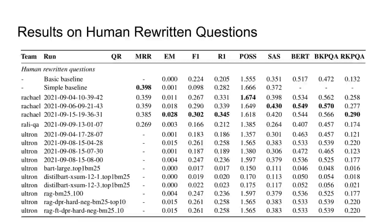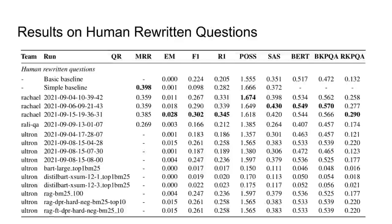Most findings on the original dataset are also valid when approaches started from the human rewritten questions. However, the simple baseline now performed best for passage retrieval in terms of MRR. Seemingly, the not-rewritten questions it used in the previous table provide a much worse starting point for passage retrieval than the automatic rewritten questions of the participating teams. For question rewriting, we see a small but consistent increase in scores compared to when using the original dataset. Despite their differences, the metrics generally agree on ranking the runs of Team Rachel high up, indicating the potential of their approach.